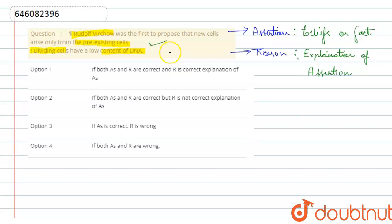Let's check whether the reason is true. Dividing cells have a low content of DNA. No, it is false. Because during meiosis, a parent cell is divided into two daughter cells, and they contain equal amount of DNA or chromosomal number.